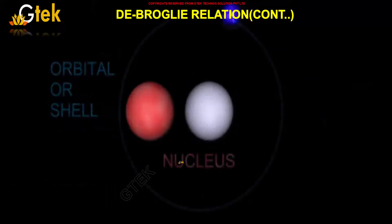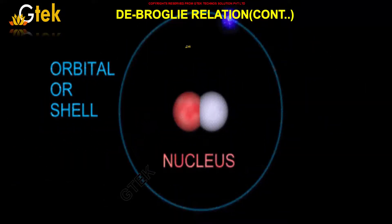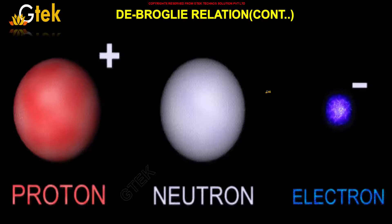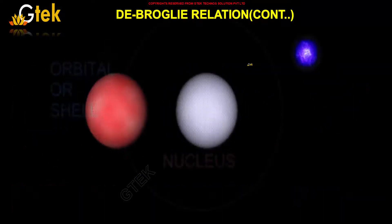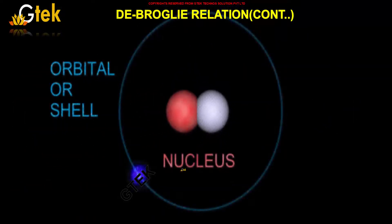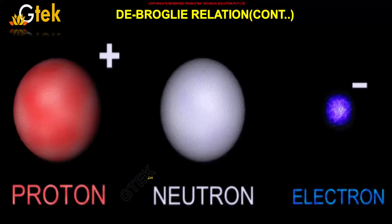Protons and neutrons form the nucleus, and you are able to see the electron. Here is the three-dimensional view of how the atom is formed. This region is called an orbital.